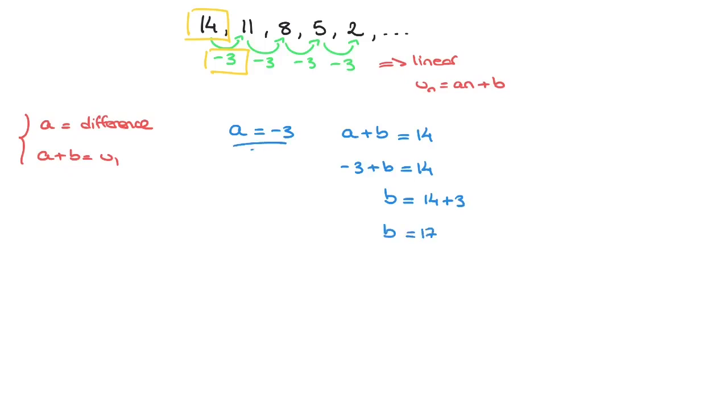We now have both a and b. And so we can state this sequence's formula. And that is un equals to negative 3n plus 17. And we're done. That's how we find the formula for the nth term of a linear sequence.